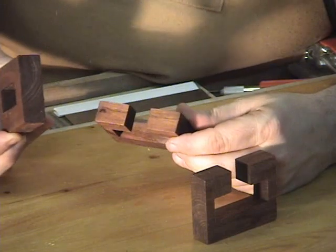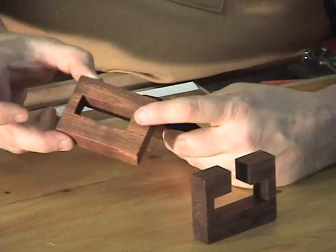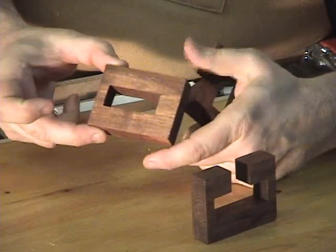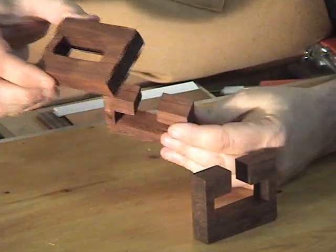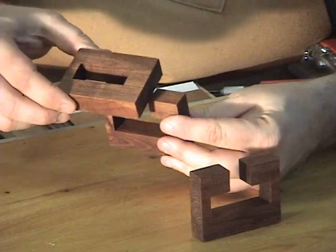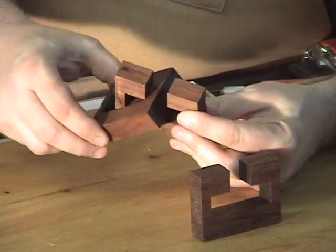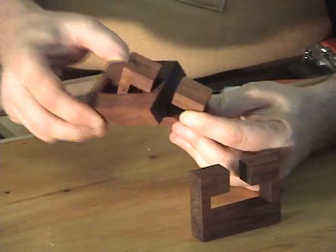Okay, and then you do just the opposite of putting it back together. You take the larger piece. If you see on this piece right here, we have a smaller end and a larger end. Take the larger end, put it in one of the C's like this.